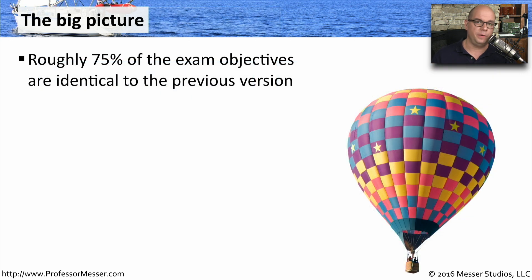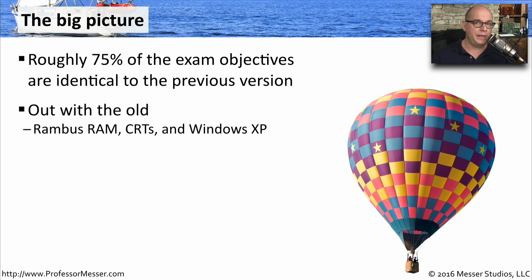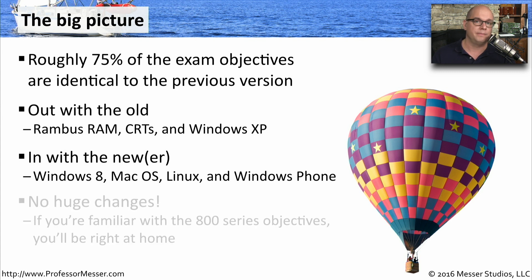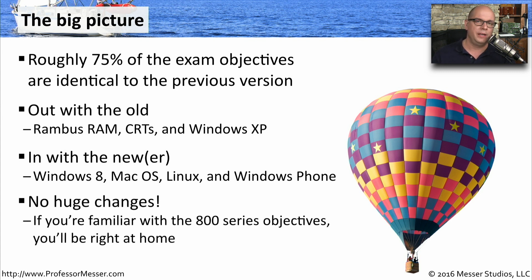If you're familiar with the 800 series exam objectives, you'll find the 900 series is very similar — I would estimate about 75% of the exam objectives are identical between the two. But not everything has made it into the 900 series. Some older technologies such as RDRAM or CRTs, and Windows XP, are no longer found in the 900 series objectives. Instead, you'll see new topics like Windows 8, Mac OS, Linux, and Windows Phone. But with those changes, the 900 series still has the same flavor and style as the 800 series did.